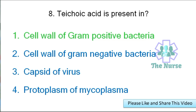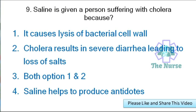Teichoic acid is present in the cell wall of gram-positive bacteria. Next question: Saline is given to a person suffering with cholera because — it causes lysis of bacteria cell wall, cholera results in severe diarrhea leading to loss of salts, both options, or saline helps to produce antidotes? Correct answer: cholera results in severe diarrhea leading to loss of salts.